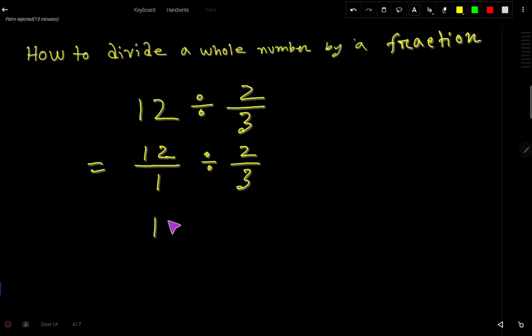Now we have to apply keep, change, and flip method. So let's keep the first fraction unchanged. Then change this division sign to multiplication sign. Then take the reciprocal of the second fraction or divisor. That is 3 over 2.